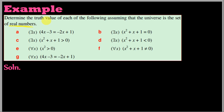There exists x such that 4x minus 3 equals 2 minus 2x plus 1. We need to determine the truth value of this existential statement over the real numbers.